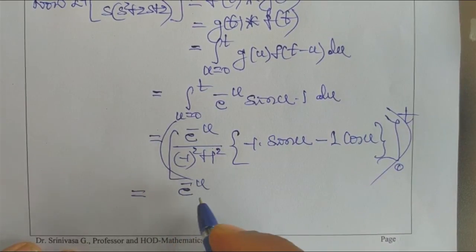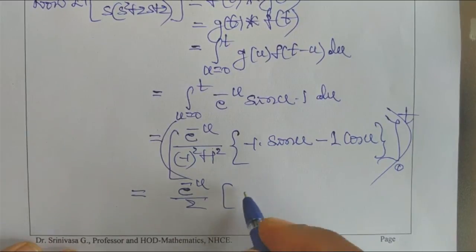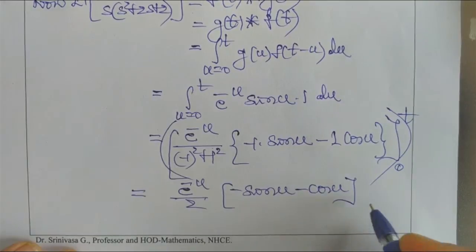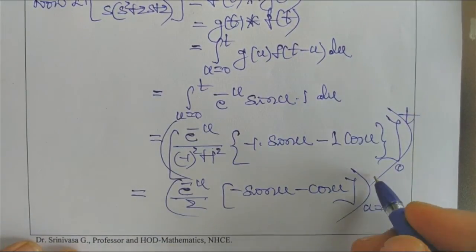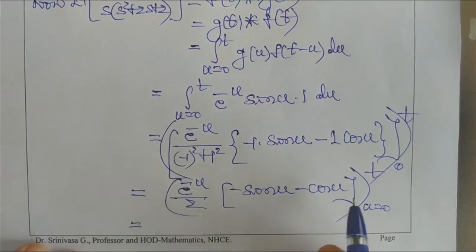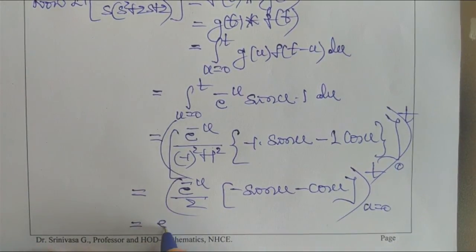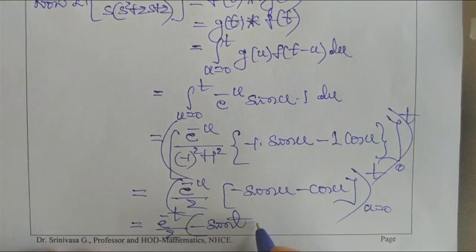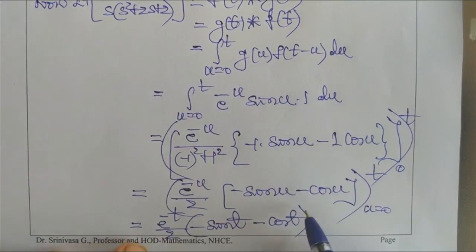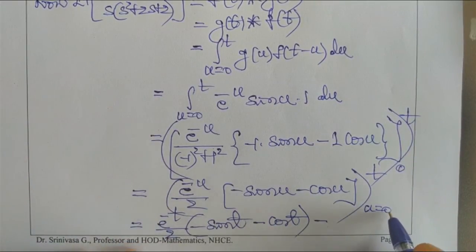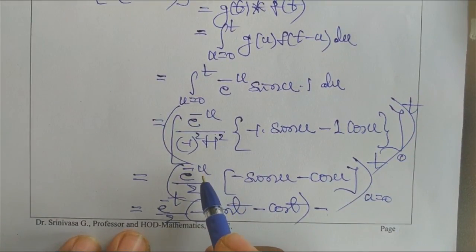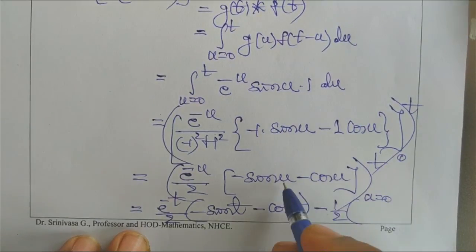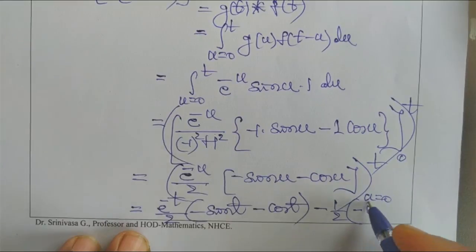Evaluating: [e^(−U)/2 · (−sin U − cos U)] from 0 to T. Upper limit (U = T): e^(−T)/2 · (−sin T − cos T). Lower limit (U = 0): e^0/2 · (sin 0 − cos 0) = 1/2 · (0 − 1) = −1/2. Subtracting lower from upper gives e^(−T)/2 · (−sin T − cos T) + 1/2.